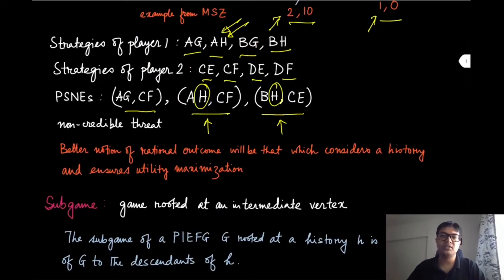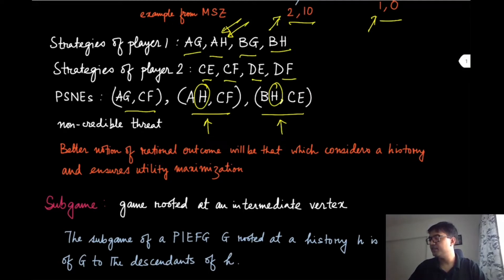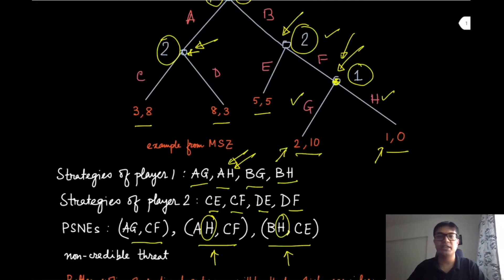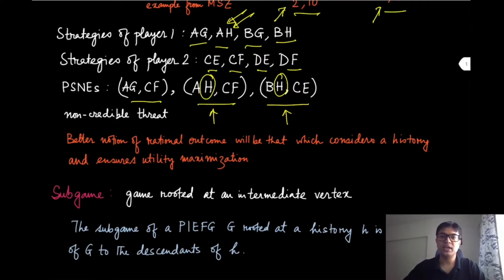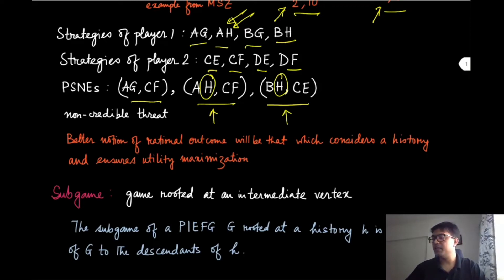Even though this turns out to be a pure strategy Nash equilibrium, this threat or this outcome is not really credible. The problem is that when we are transforming the game, we are actually losing the information that player one can observe the outcome and then pick its action. Our equilibrium notion should also change based on which kind of games we are choosing. We should look at a notion of rational outcome that considers the history and ensures utility maximization at every possible history — and that is exactly where we bring in the concept of subgame.